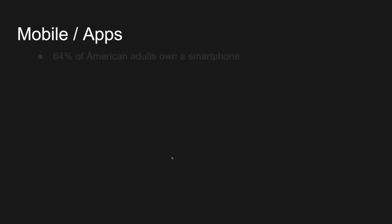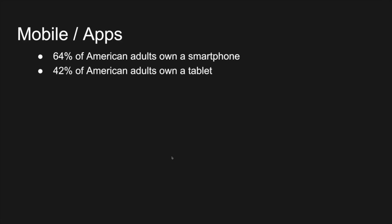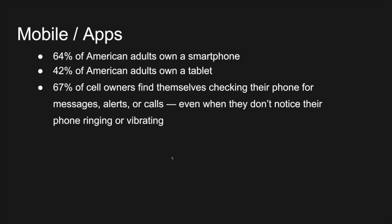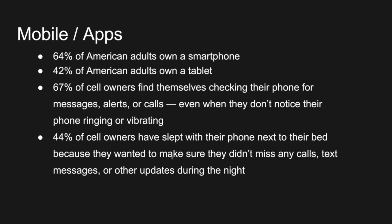Then we move into the world of mobile and apps, going through some basic stats from Pew Internet research. 64% of American adults own a smartphone, and these numbers are just growing. 42% of American adults are on a tablet. 67% of cell owners check their phone for messages, alerts, or calls even when they don't notice it ringing. 44% of cell users have slept with their phone next to their bed. Mobile technology is really more of an extension of ourselves than a separate device like a desktop computer.